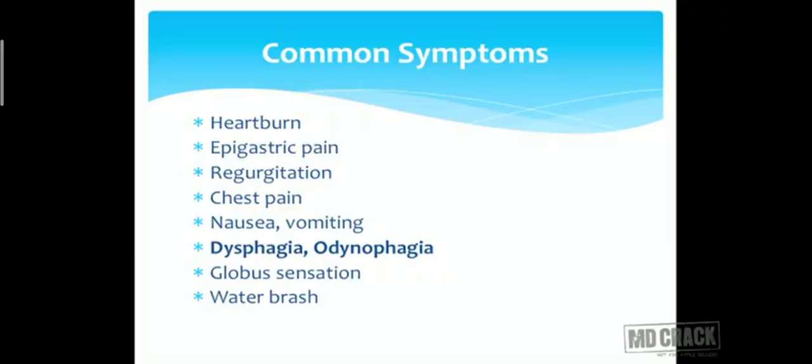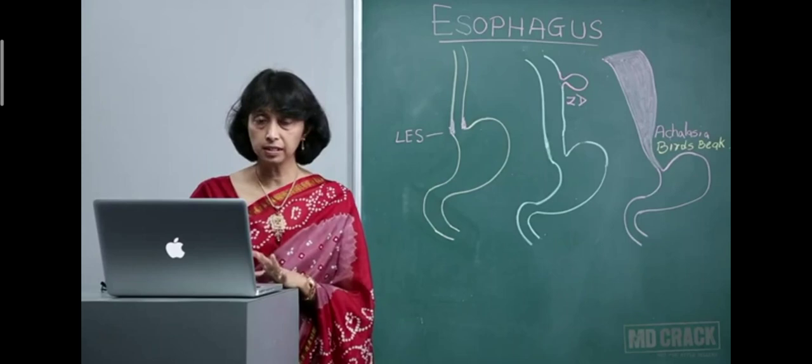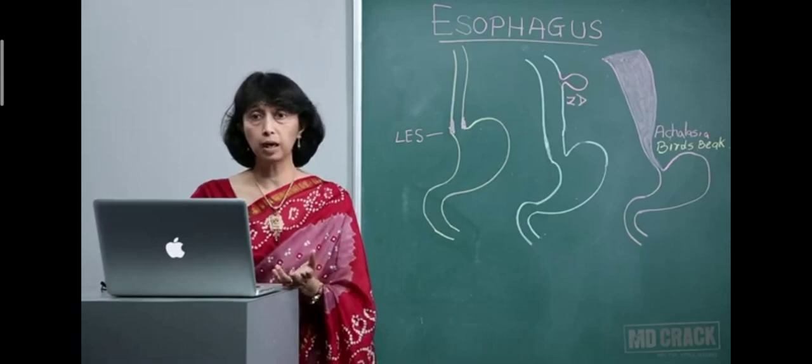The common symptoms of esophageal disease are heartburn, epigastric pain, regurgitation of food, chest pain, nausea, and vomiting. The difference between regurgitation and vomiting is that in regurgitation, undigested food particles come out from the esophagus back to the mouth, whereas in vomiting there is actual retching — the stomach contents come out up to the mouth by a retching phenomenon.